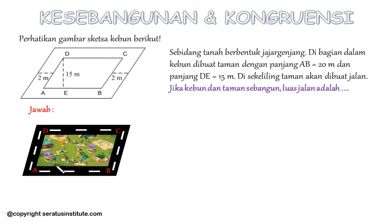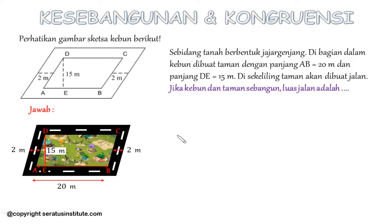B, C, dan D. Diketahui panjang AB nya sama dengan 20 meter. Kemudian lebar jalannya di samping kanan dan kiri sama, yaitu 2 meter. Kemudian diketahui juga panjang DE yaitu 15 meter.